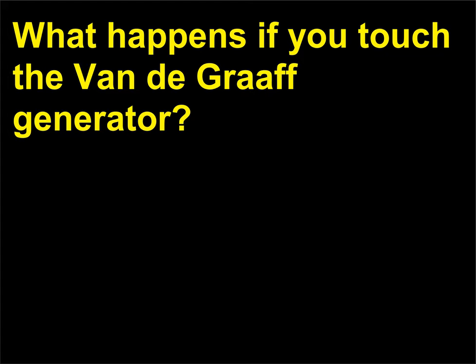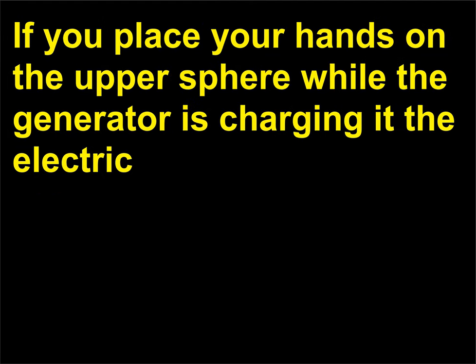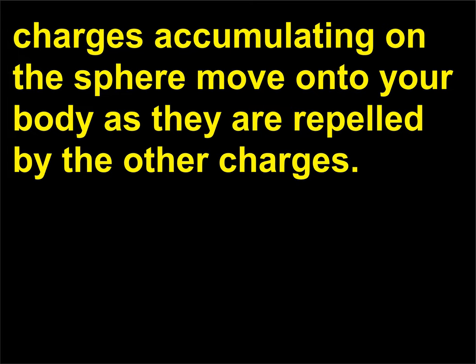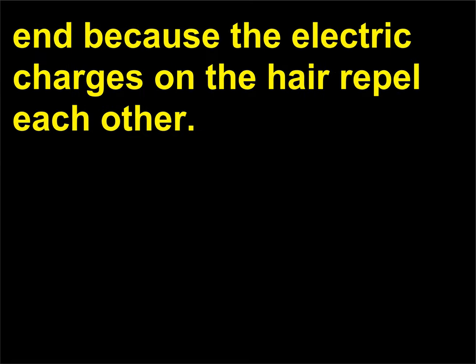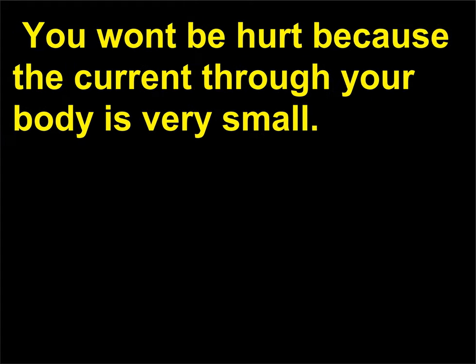What happens if you touch the Van de Graaff generator? If you place your hands on the upper sphere while the generator is charging, the electric charges accumulating on the sphere move onto your body as they are repelled by the other charges. When your body has enough charge your hair may stand up, because the electric charges on the hair repel each other. You won't be hurt because the current through your body is very small. Just don't touch anything or anyone else.